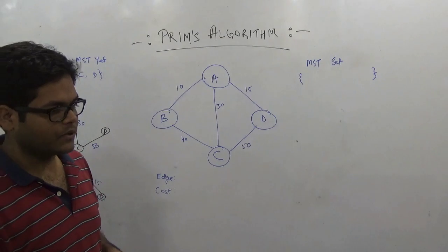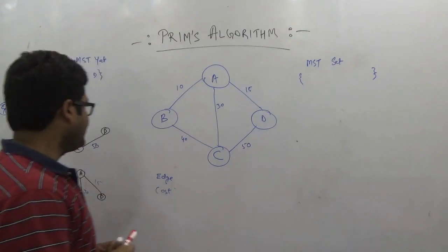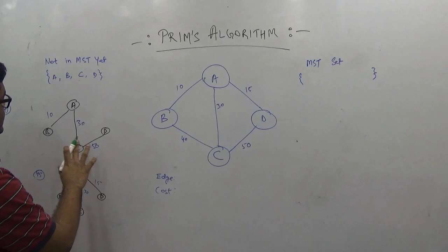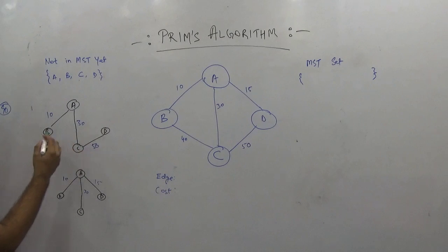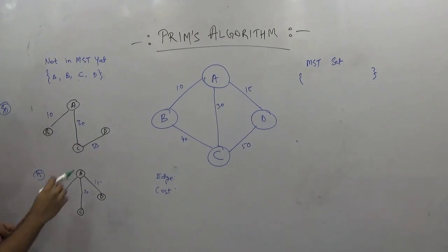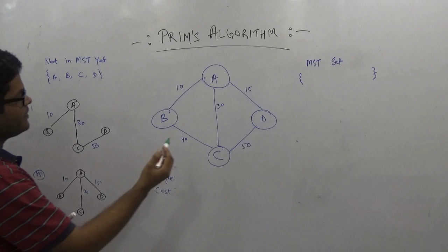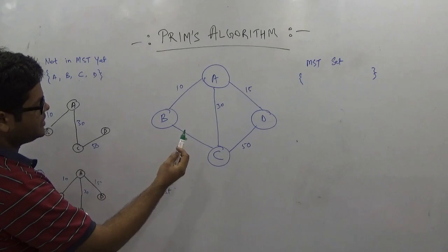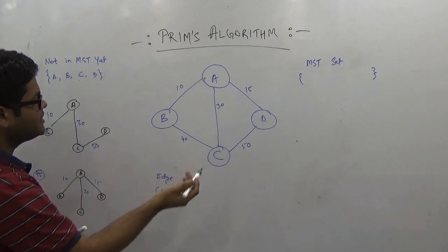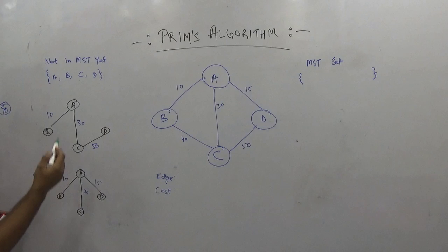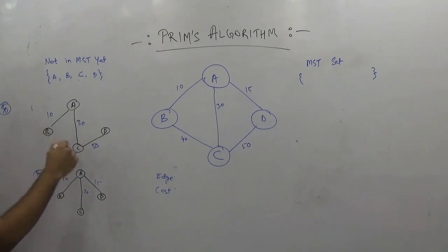First of all, let's understand what a spanning tree is. A spanning tree for a weighted undirected graph is a subgraph that connects all the vertices together using the minimum number of edges required. For a graph with V vertices, we need to have V-1 edges that connect the graph together, and the graph should be connected in such a way that there is no cycle.